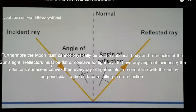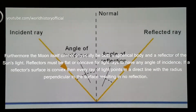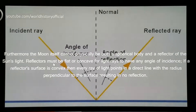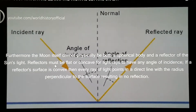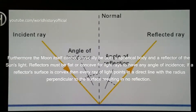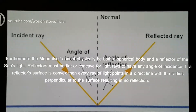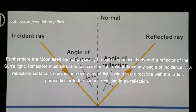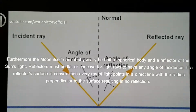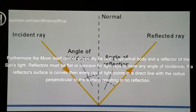Furthermore, the moon itself cannot physically be both a spherical body and a reflector of the sun's light. Reflectors must be flat or concave for light rays to have any angle of incidence. If a reflector's surface is convex, then every ray of light points in a direct line with the radius perpendicular to the surface, resulting in no reflection.